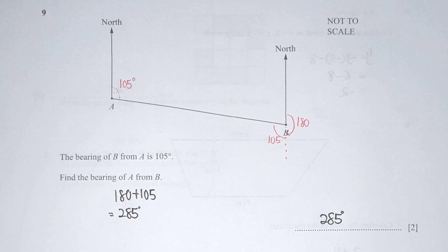For question 9, they gave us that the bearing of B from A is 105. You can use the alternate angle theorem to transfer the 105-degree information to the other side. The last thing to add is 180, so 180 plus 105 gives you the bearing of A from B as 285.